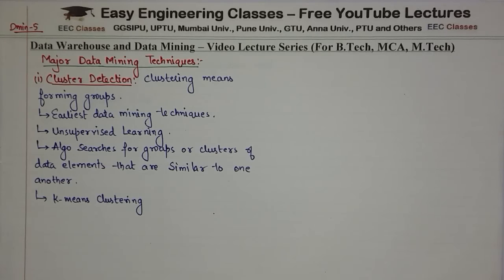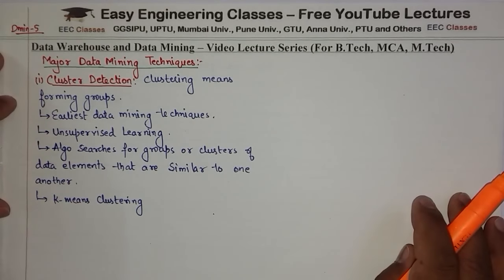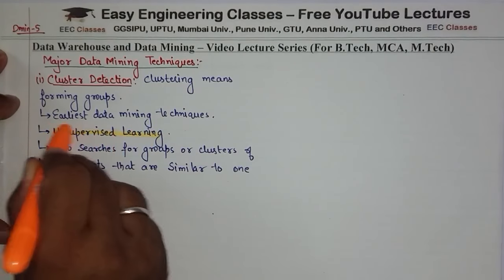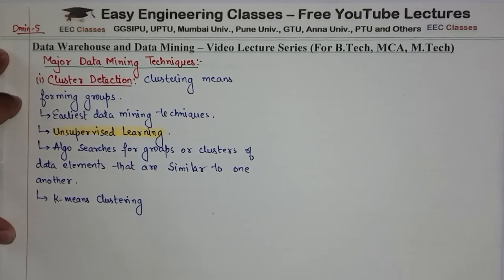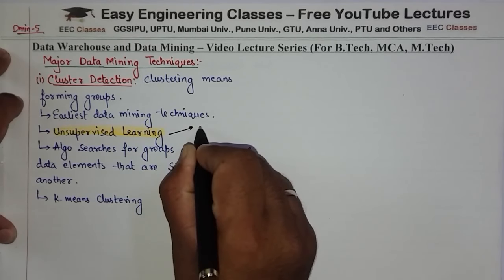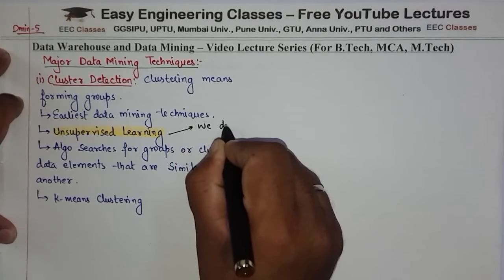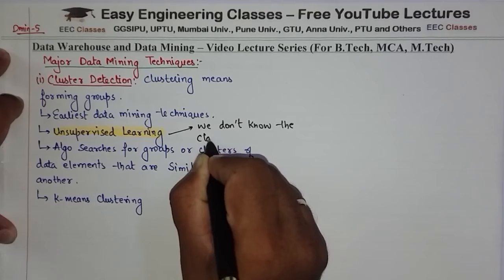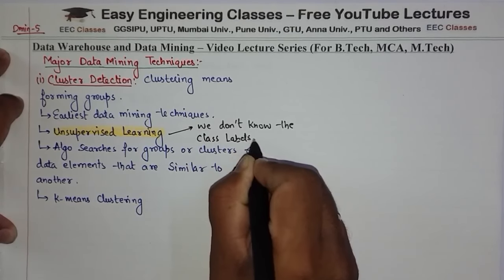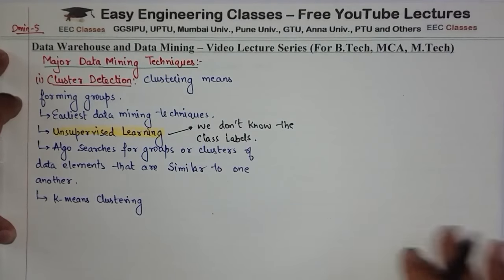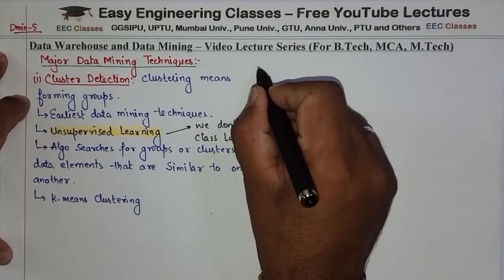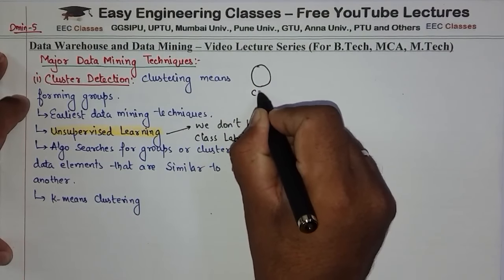The technique we are covering is Cluster Detection. The first thing is that it is Unsupervised Learning. Unsupervised Learning means that we don't know the class labels. We don't know the class labels. Clustering is about forming groups. For example, if I say that I have two clusters, one C1 and one C2.